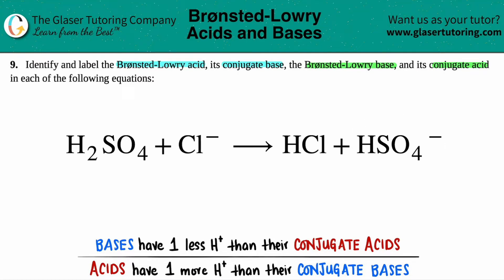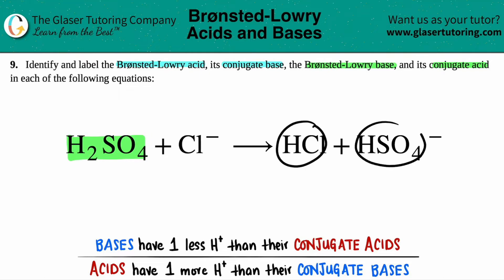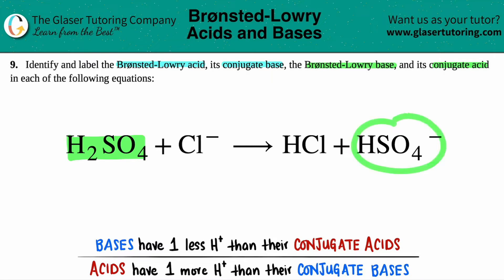Pick out the ions or the molecules that go together, that look very similar. So for example, if I highlight this H₂SO₄ on the reactant side, which one of these hooks up with on the product side? Which one looks more like H₂SO₄ — HCl or HSO₄⁻? Yeah, HSO₄⁻ for sure. So these are one pair.